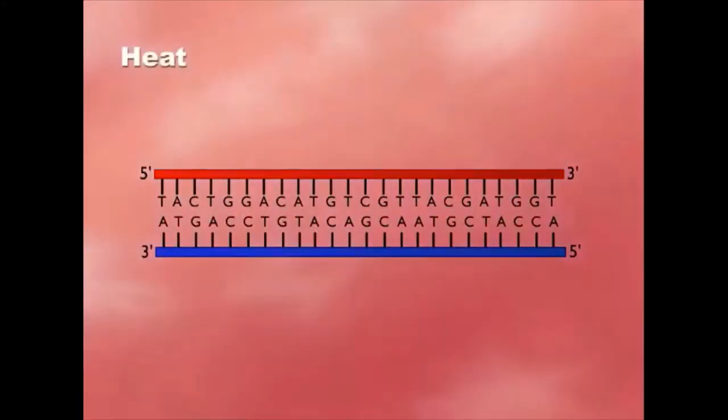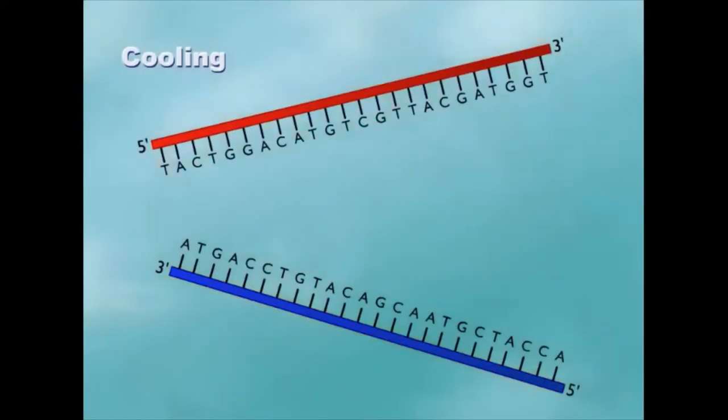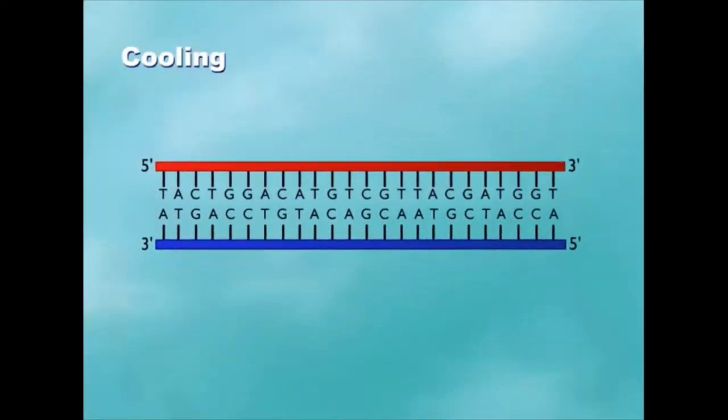At high temperatures, double-stranded DNA will denature or separate into single strands. When the temperature is lowered, the two strands will anneal because of the base pairing interactions of the complementary strands.